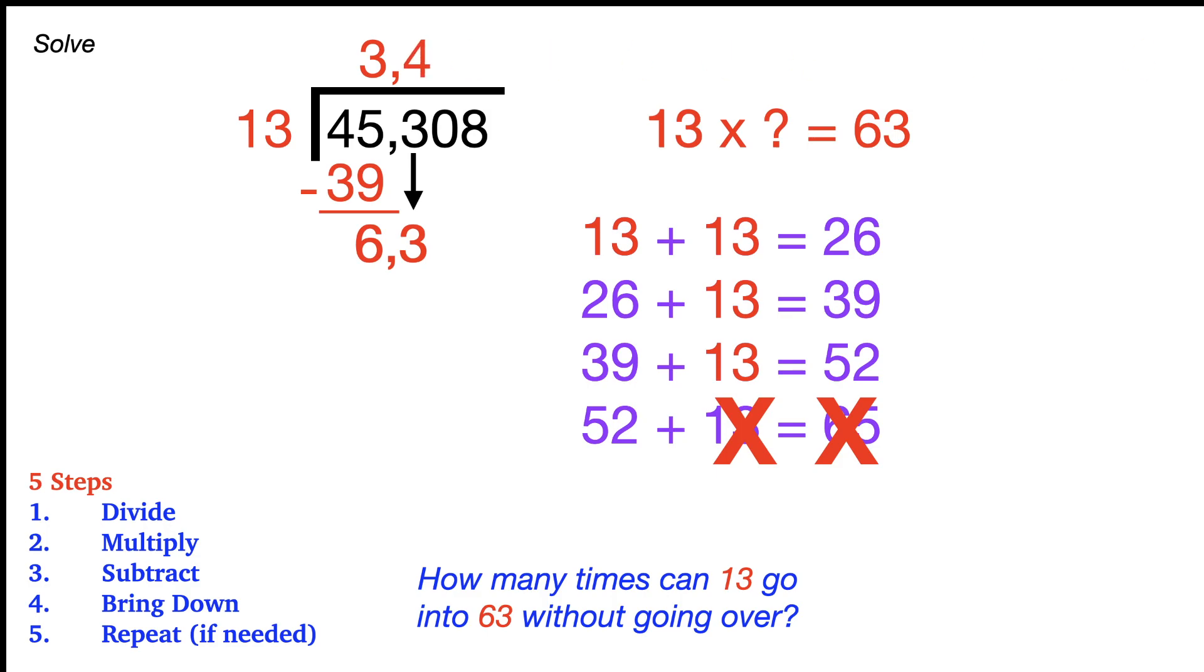So four groups of 13, right? And we're going to go 13 times 4 is 52. 52 goes on the bottom, and we're ready to subtract. 63 minus 52 is 11. Just ignore that comma for now. And as long as it's not 13 or more, we're doing fine. And we're going to now bring down the zero, and we have 110.